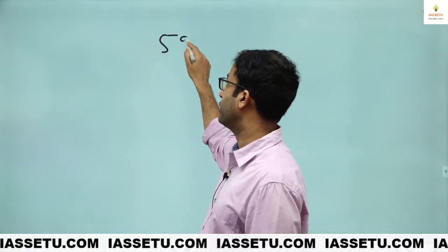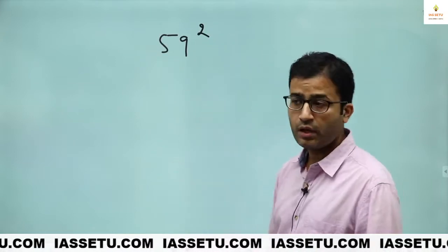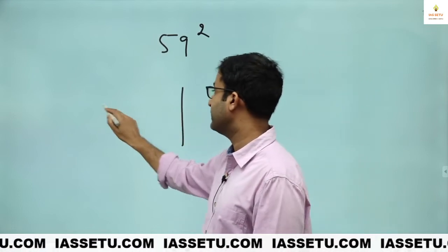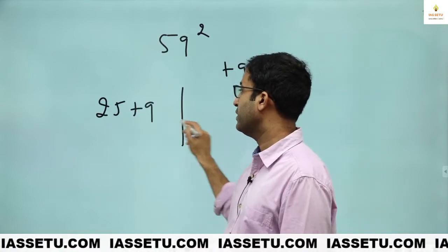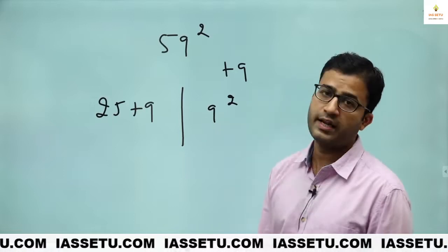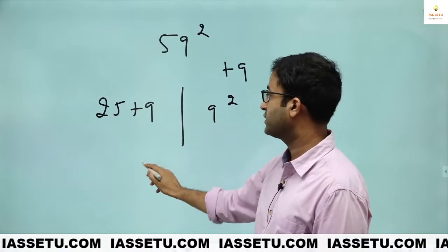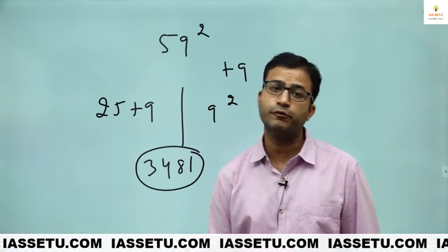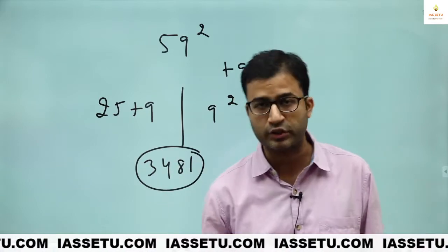Now you try 59 square. So what is important here? Plus 9. So left hand side, it is 25 plus 9. Right hand side, it is 9 square. So what is this? 34, 81. 3481. 59 square is this.